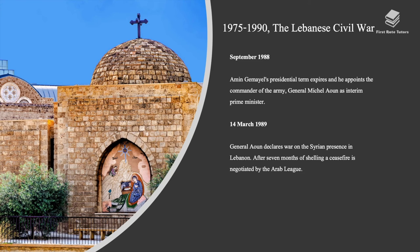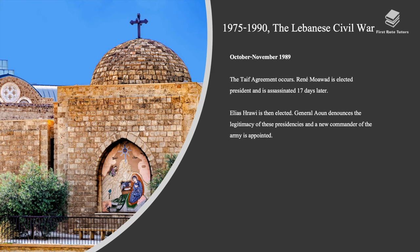In September 1988, Amin Jumayel's presidential term expired and he appointed the commander of the army. In March 1989, General Aoun declared war on the Syrian presence in Lebanon. After seven months of shelling, a ceasefire was negotiated by the Arab League. Between October and November 1989, the Taif Agreement was reached. René Mouawad was elected president and assassinated 17 days later. Elias Hrawi was then elected. General Aoun denounced the legitimacy of these presidencies and a new commander of the army was appointed.